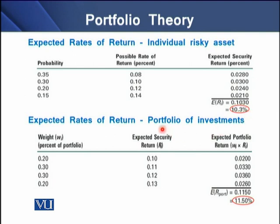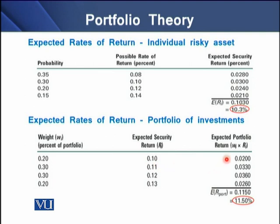To determine the expected rate of return for a portfolio of investments, we have in the example four types of investments with their values in absolute amounts. The weights of these values are described here as 20%, 30%, 30%, and 20%. Then we have the expected rate of return for each security. The multiplication of these two columns gives us the expected return of each individual security, and summing up these weighted returns, we have an expected portfolio return of 11.5%.